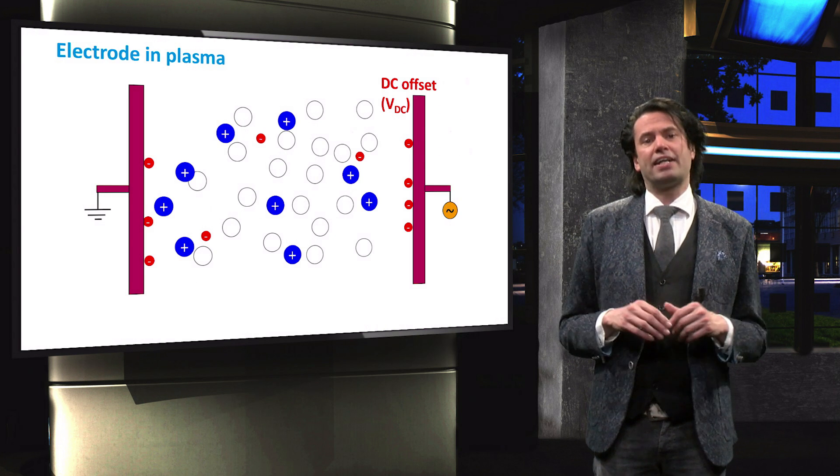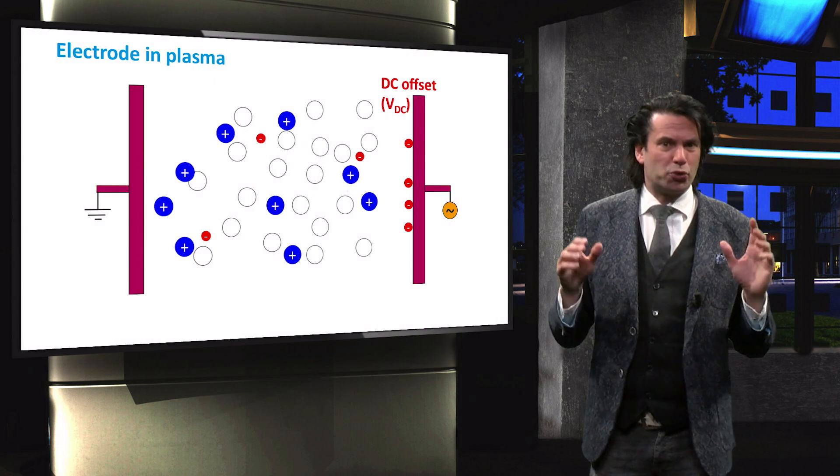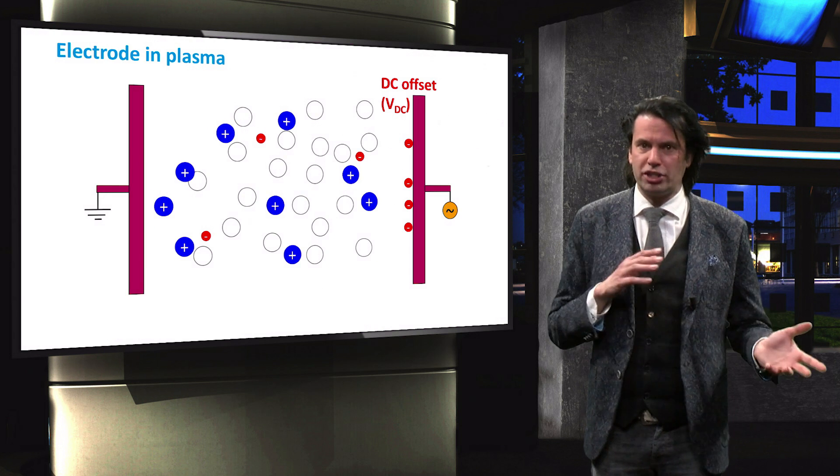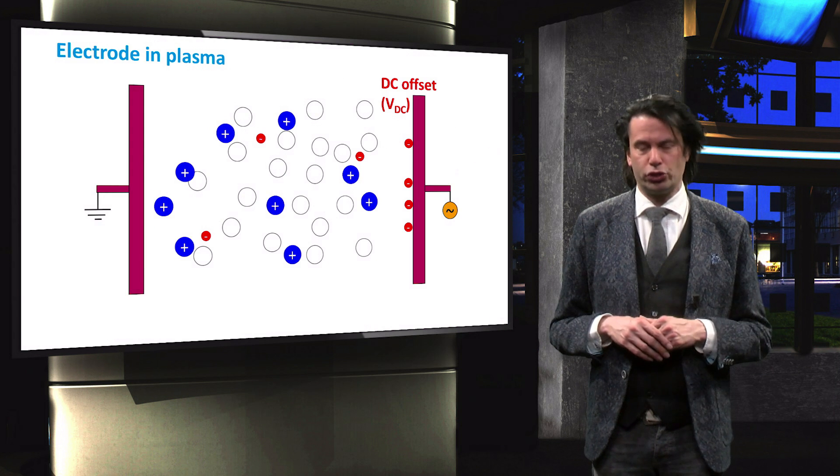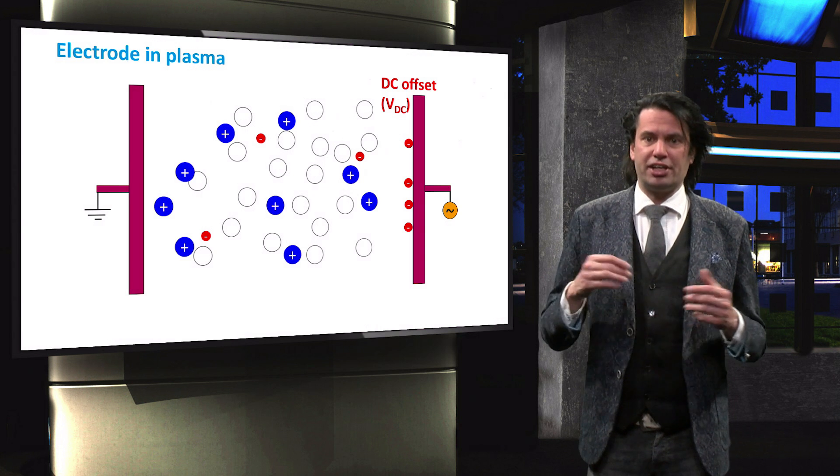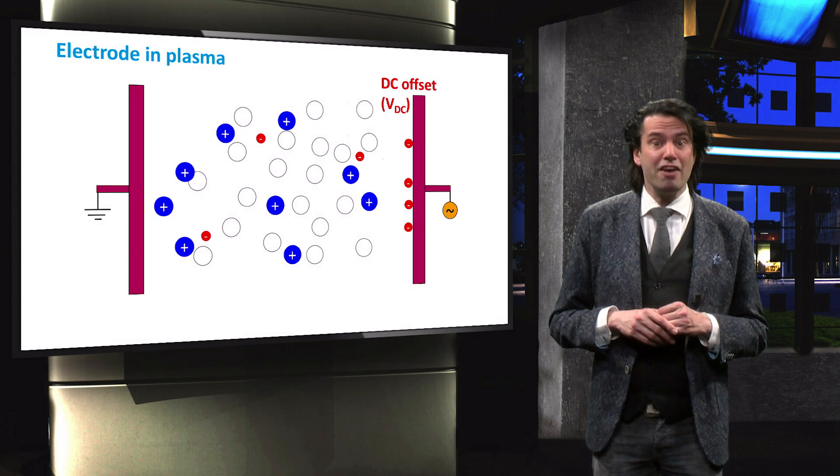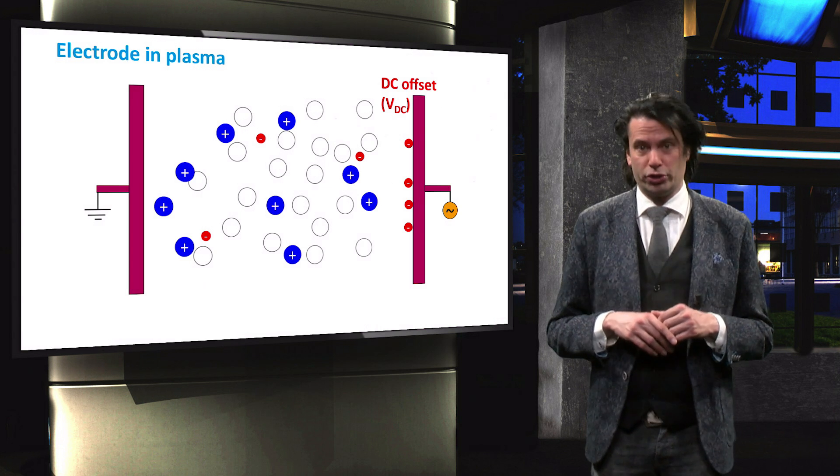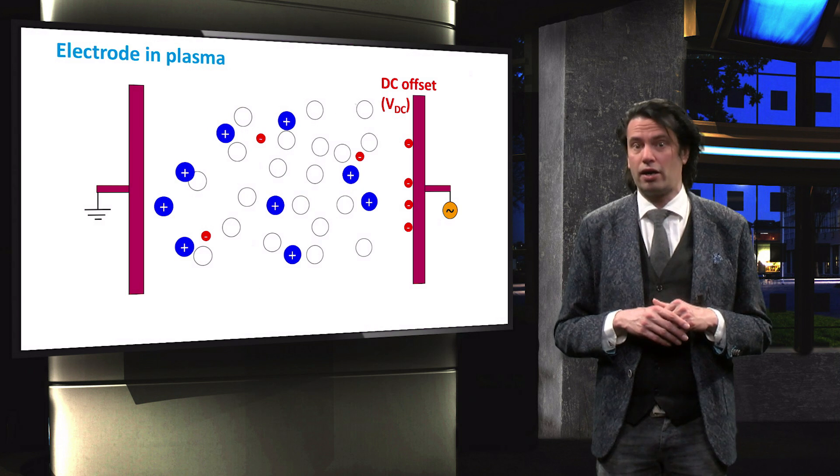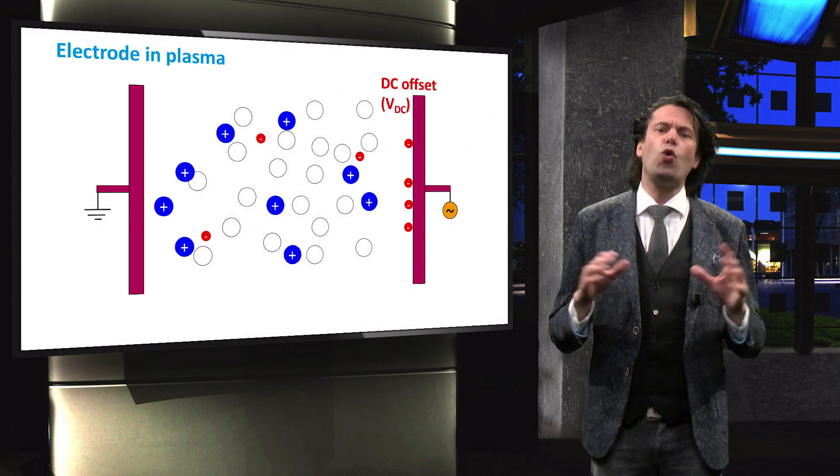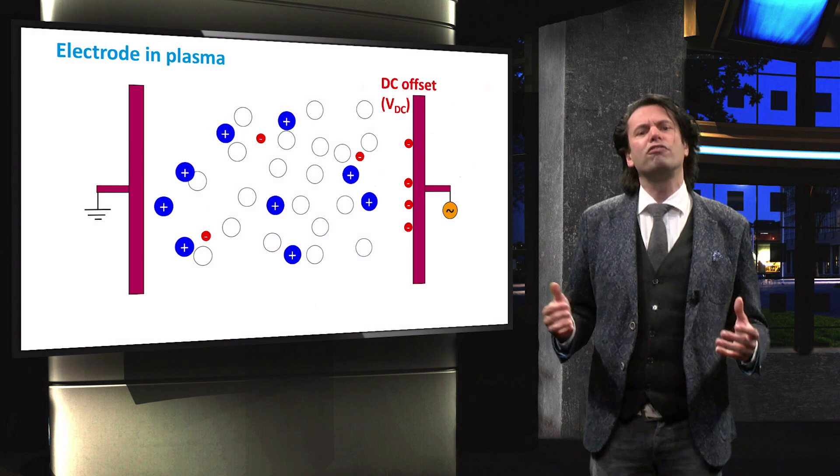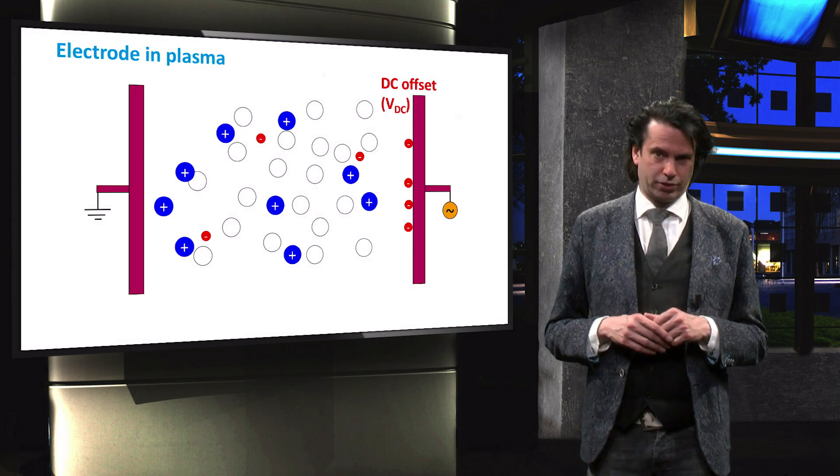In the plasma enhanced chemical vapor deposition setup, a grounded and an AC powered electrode are used instead of the switching positive and negative ones we just described. A generator connected to the powered electrode generates an AC current at high frequencies of 13.7 MHz, which is referred to as radio frequency or RF. Since the grounded electrode always remains neutral, so at zero volts, the DC offset only occurs at the surface of the powered electrode.